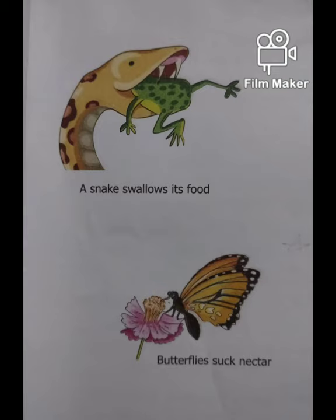Now we will learn about animals that swallow the whole food. How does a snake swallow its food? Snakes don't have teeth, so what they do is swallow the whole food. Now, butterflies - butterflies suck nectar. Butterflies and insects take liquid food. Butterflies also do not have teeth.